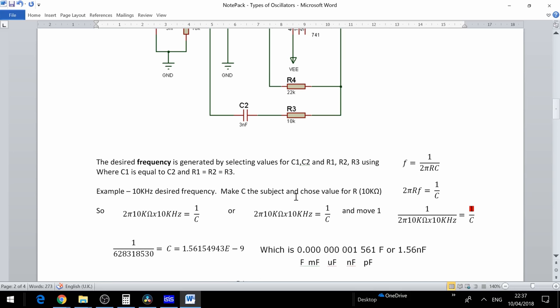Therefore we need to make C the subject and choose an appropriate value for R. In this example we will choose a value of 10 kilo ohms. We will then rearrange this formula so that we can obtain C more easily and input our values. 2 pi times 10 kilo ohms times 10 kilohertz equals 1 over C. Let's move the 1 over so that we can calculate C. That gives us a tremendously small number of 1.56 times E to the minus 9, which equals 1.56 nanofarad.